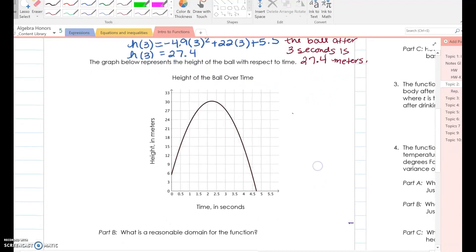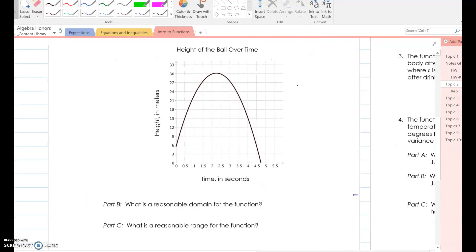Okay. So the graph below represents the height of the ball with respect to time. So we're looking, we're using this graph to answer these questions. So part B says, what is a reasonable domain? Again, what is domain? Domain, we talked about yesterday, domain is our X values. So what is a reasonable domain? So I'm looking at my X axis, but I'm also paying attention to my graph.